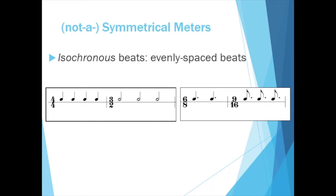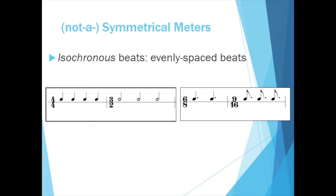Recall that we can also describe meters based on how many divisions divide each beat. 4-4 and 3-2 are simple meters because each beat has two divisions, and 6-8 and 9-16 are compound meters because each beat has three divisions.